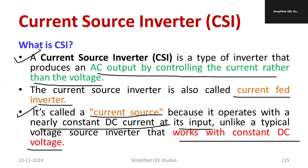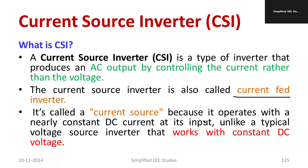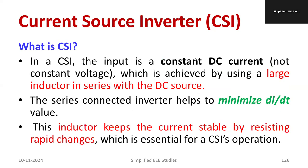The input current is constant. Using that particular current, we are going to control the output voltage. If you see the input, we will be getting a constant DC current.